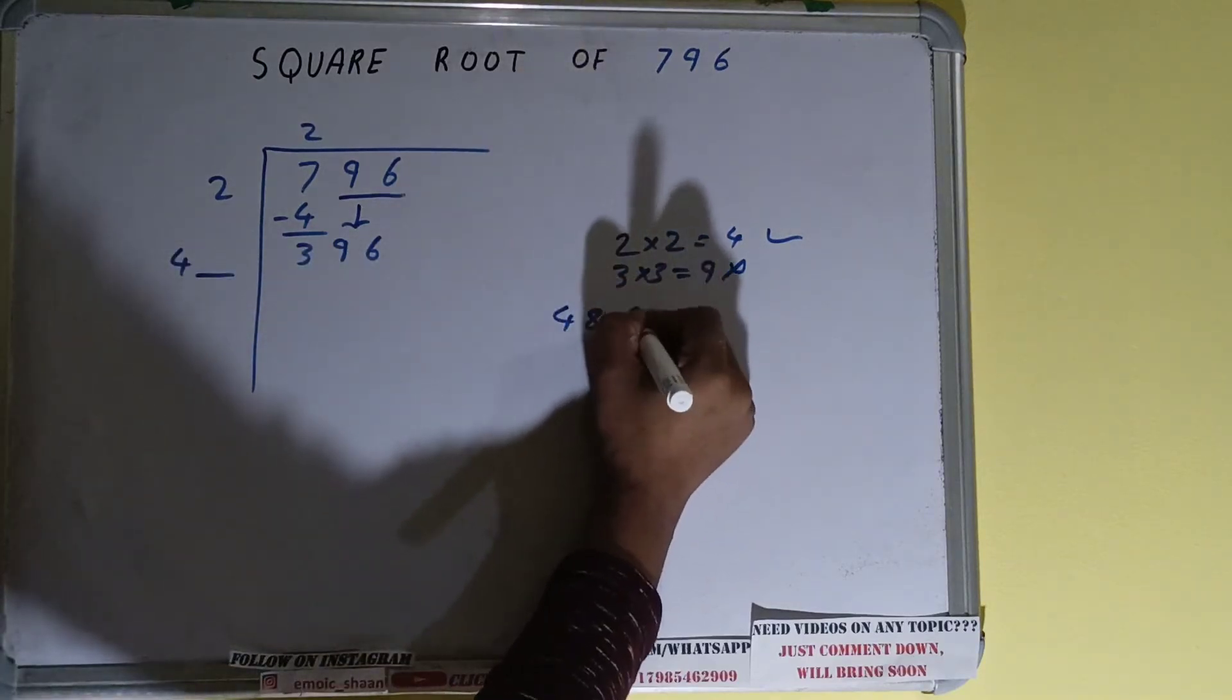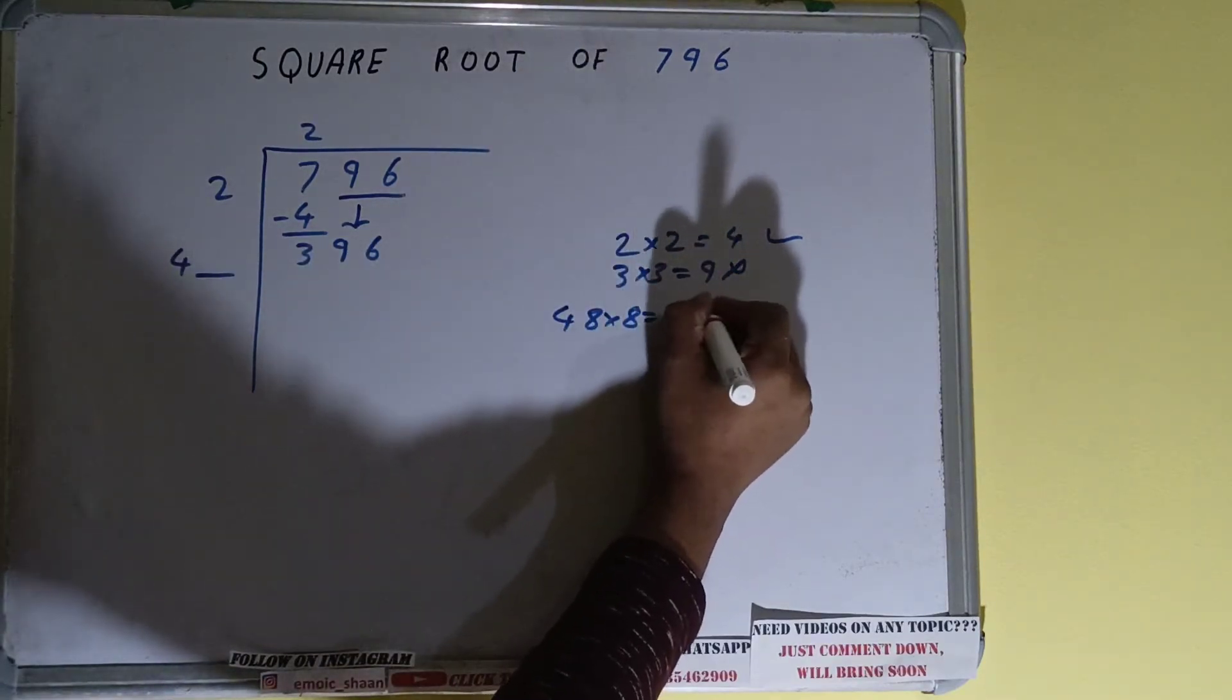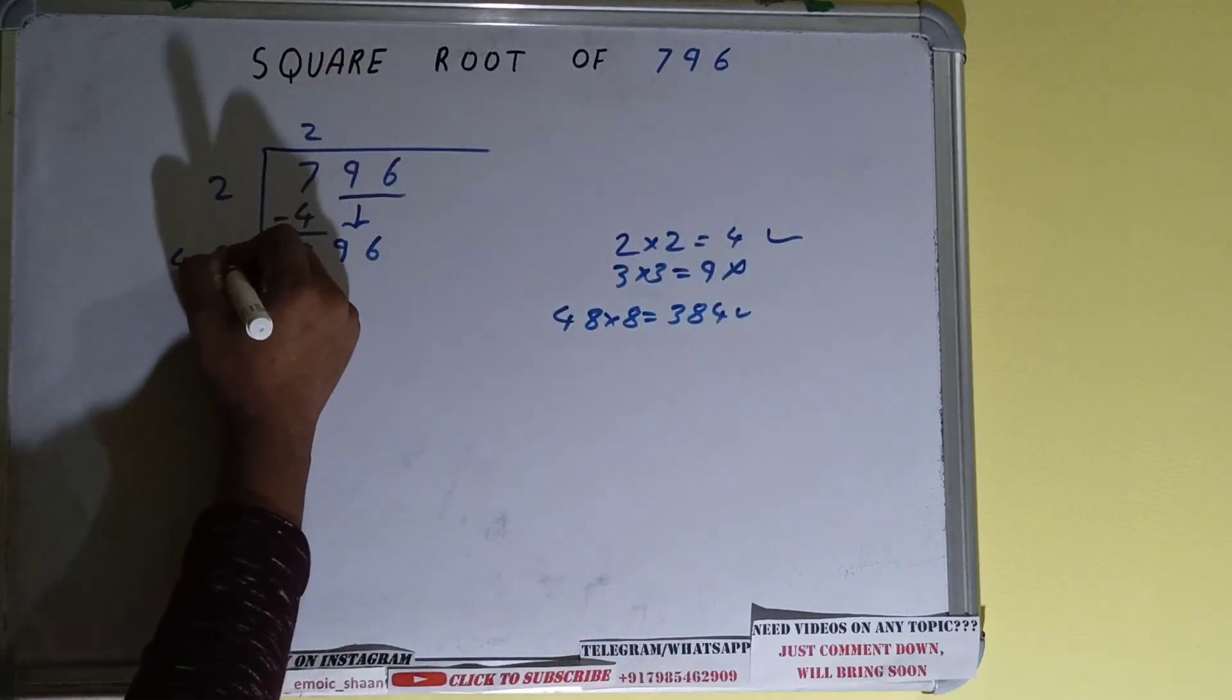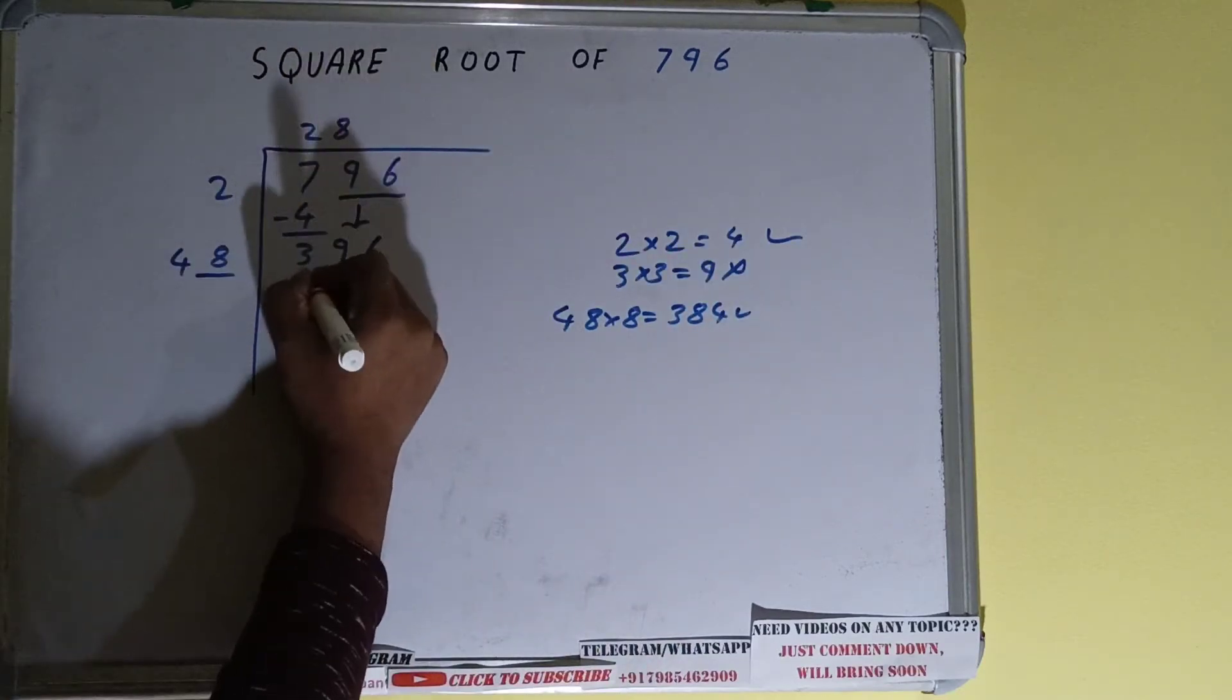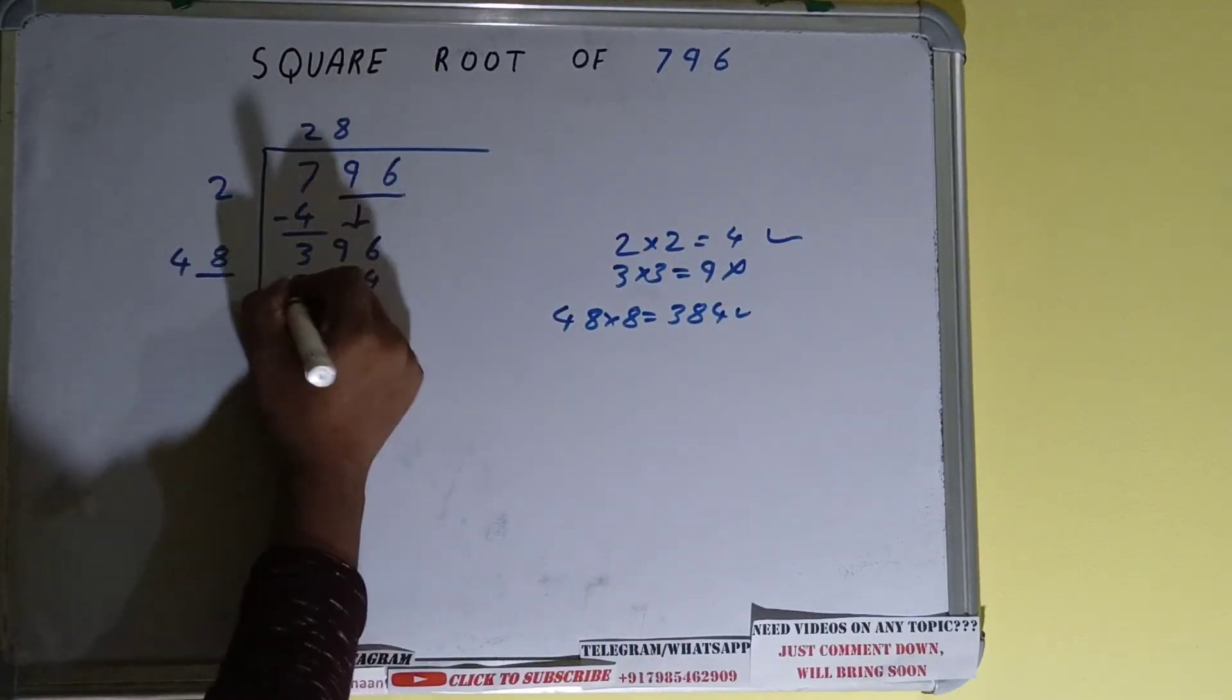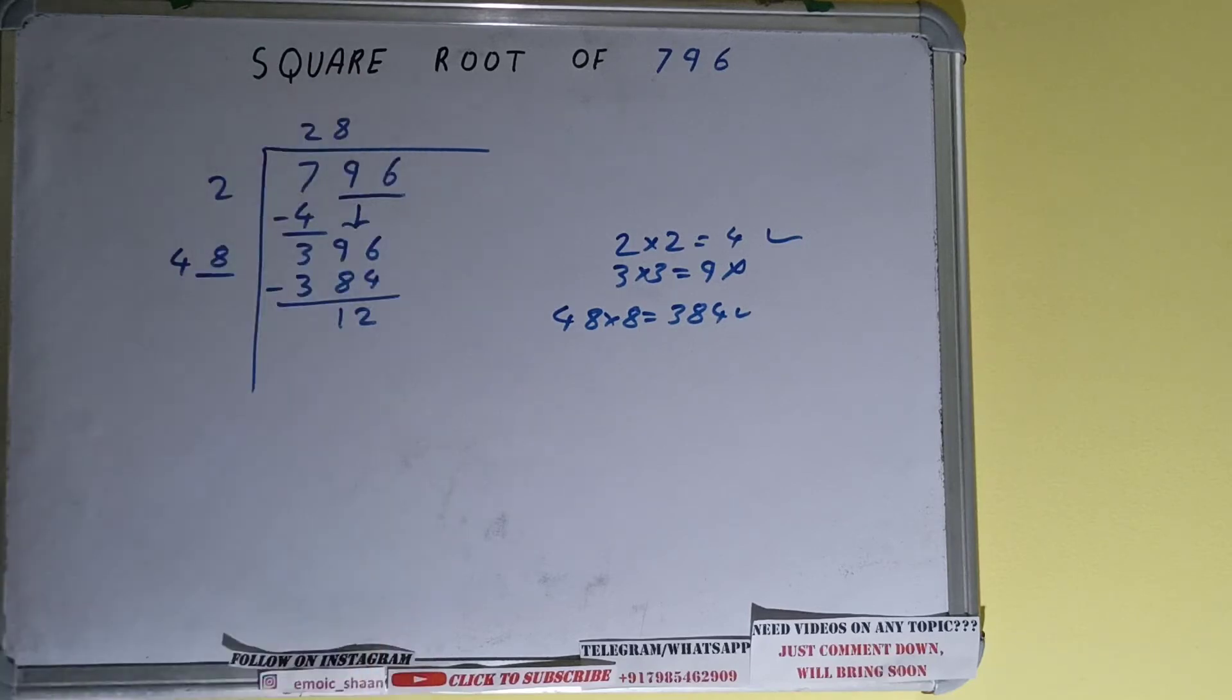So if we try with 8, 48 times 8 will be 384. That is good to take. So 8 here and 8 here will be 384, and on subtracting, 12 will be left. Now 48 times 8, so add both.